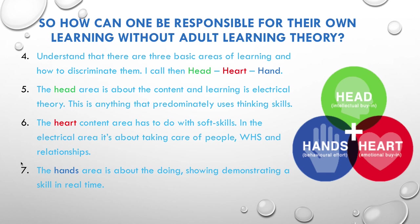So how can one be responsible for their own learning without adult learning theory? There's this thing we call hands, head, and heart — you can see it on the right-hand side logo. This is a way we can divide up learning: there are certain things we can learn hands-on, things we can learn cognitively with our heads, and emotional things we can learn with our hearts. We can break our learning up into these three categories.